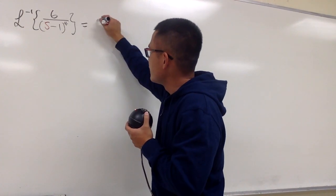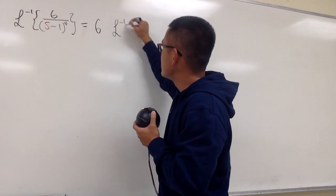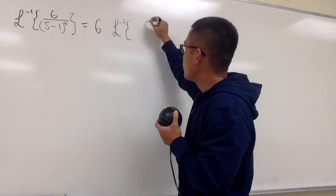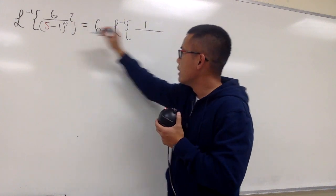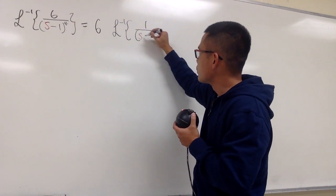For the 6, let's just take it to the front, and then we have the inverse Laplace transform. On the top, I will just have a 1 now, over this is going to be s, which is in red, and then minus 1.